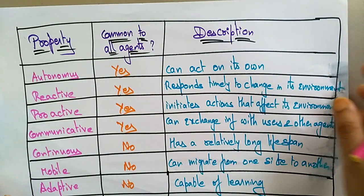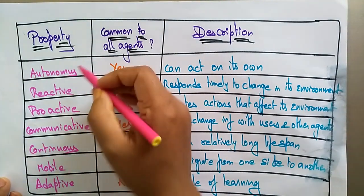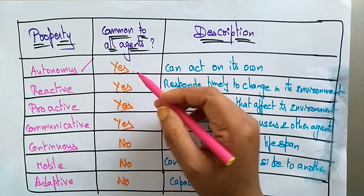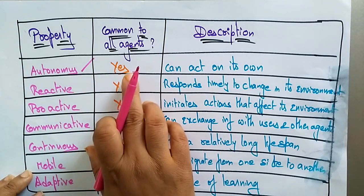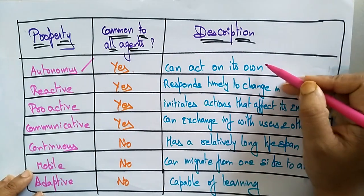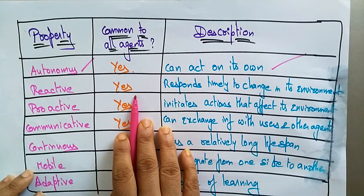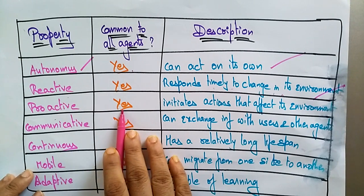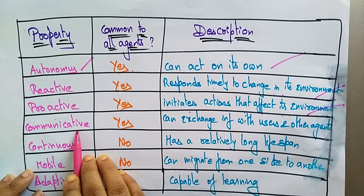Some important properties by which different types of agents can be distinguished are as follows. The property 'autonomous' — the ability to act on its own — is common to all agents: collaborative, mobile, interface, and information agents. 'Reactive' — giving a timely response to changes in its environment — is also common to all agents. 'Proactive' — initiating actions that affect its environment — is common to all agents. 'Communicative' — the ability to exchange information with users and other agents — is also common to all agents.